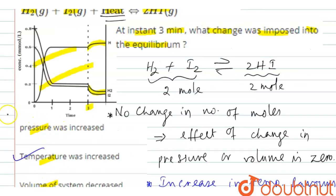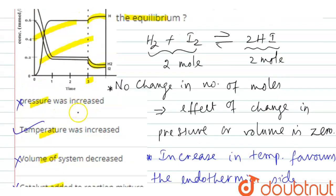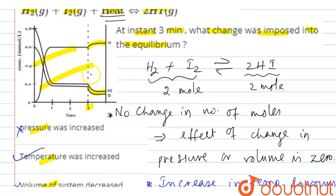Therefore, pressure has no effect, this option is wrong. Volume has decreased, this option is wrong. Catalyst added to the reaction, this option is also wrong because catalyst equally affects both reactions. Therefore, the only correct option is temperature has increased, so that its effect is seen in the graph.